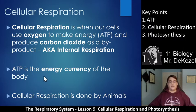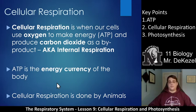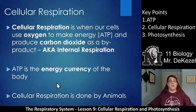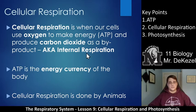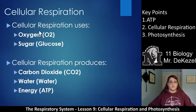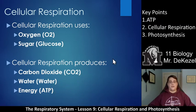So we call ATP the energy currency of the body. And cellular respiration is done by animals — so humans are animals. In contrast, photosynthesis occurs in plants. So all animals take in oxygen and release CO2 while making energy for themselves. And they breathe out CO2, which is the exact opposite of what happens in photosynthesis. So cellular respiration again uses oxygen and sugar — which we learned about in the nutrients unit — to create carbon dioxide, water, and energy.